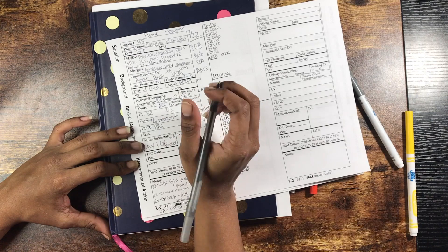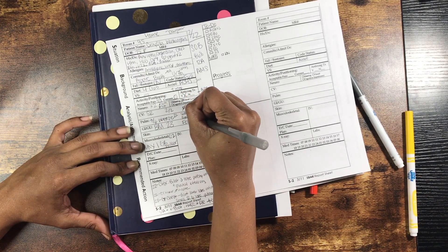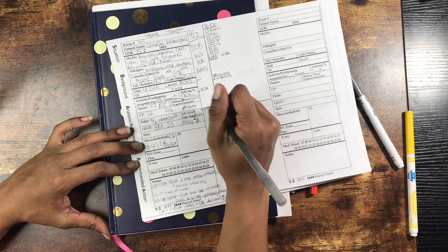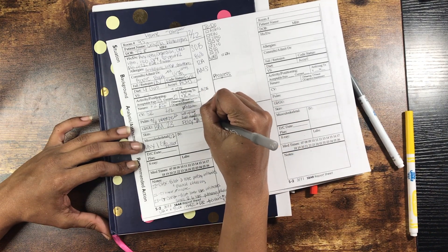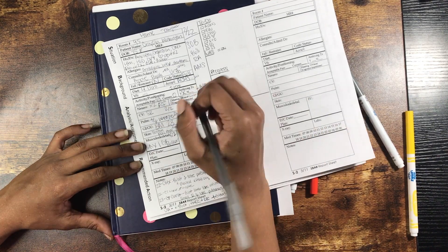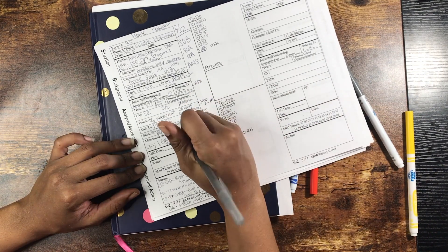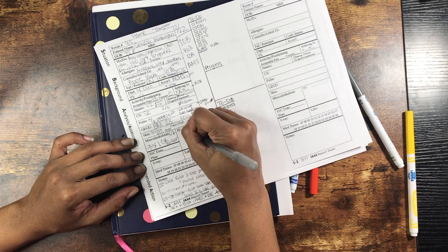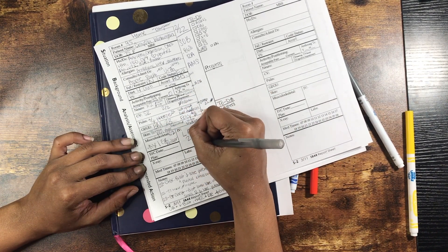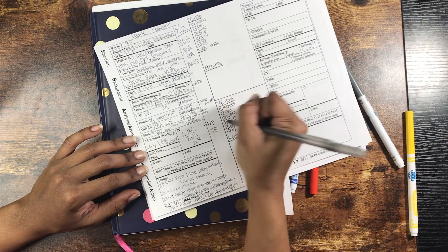Her last bowel movement was on the 23rd and she has a foley for accurate I's and O's. It's been clear but sediment. Her bottom and peri area is excoriated so we've been using Balmex cream and Nystatin powder. Her IV is a left AC 20 gauge placed on the 22nd. It has normal saline going at 75 mLs an hour.